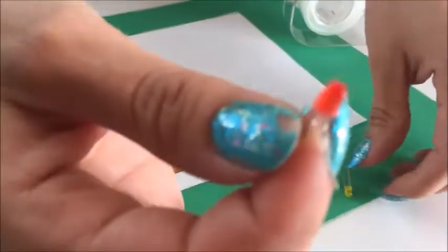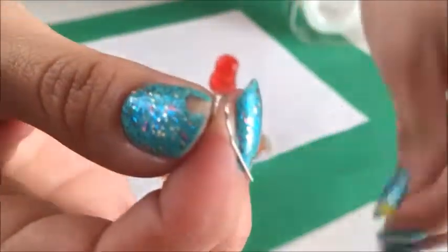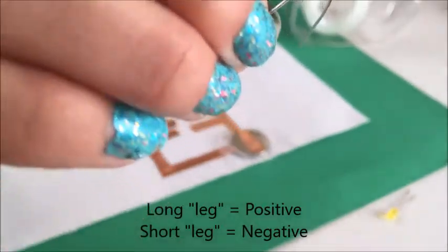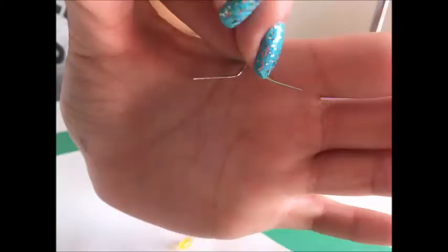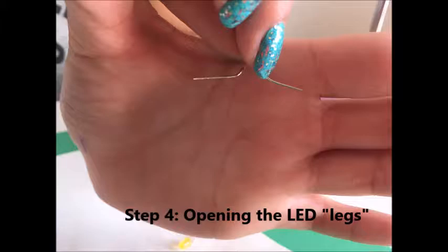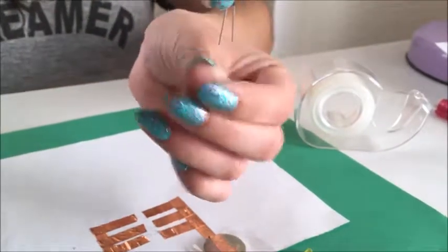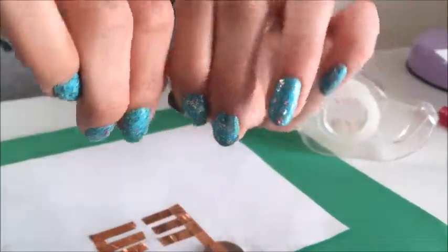Next, we will use the LED lights. Remember the long leg is the positive and the shorter leg is the negative. We are going to make our legs look like this. Gently take each of the legs and pull them out to the sides.